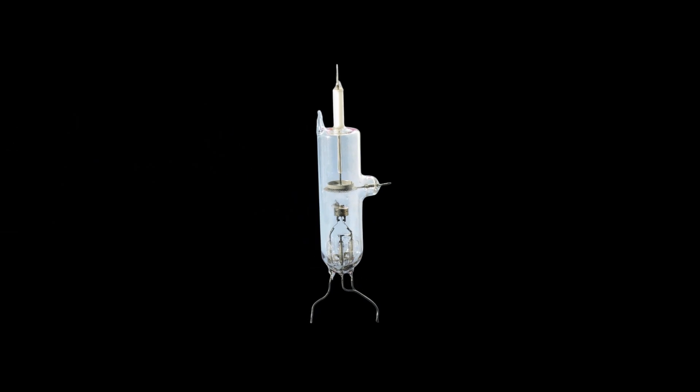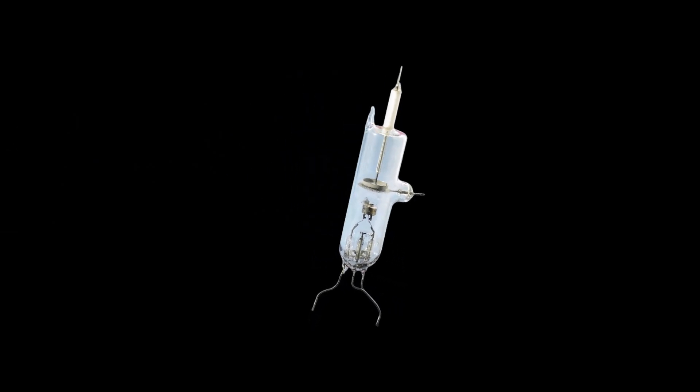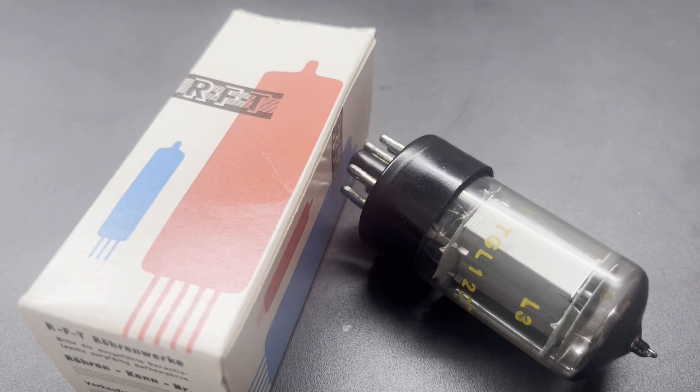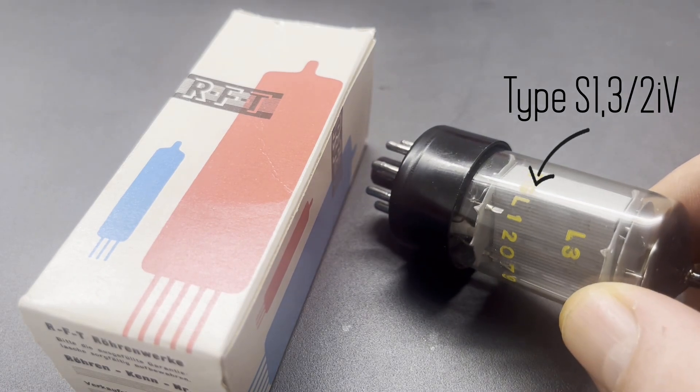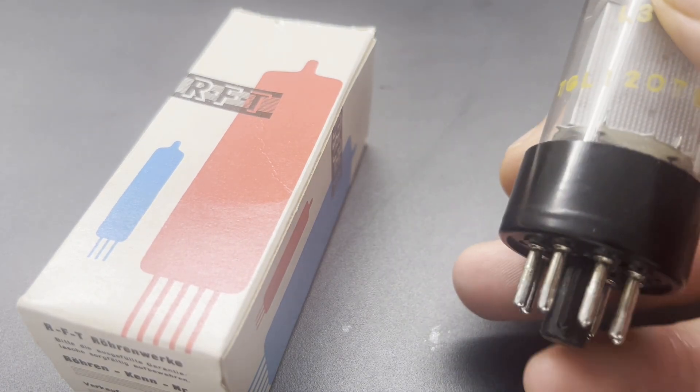In the original experiment, a tube filled with mercury vapor was used. However, we use a so-called thyratron tube filled with argon. It doesn't need an oven and is much cheaper.